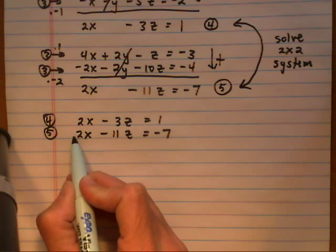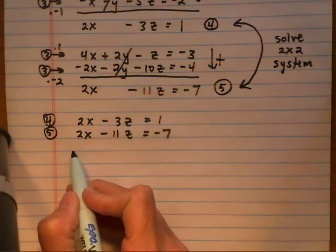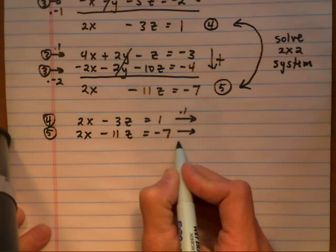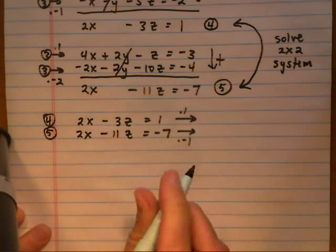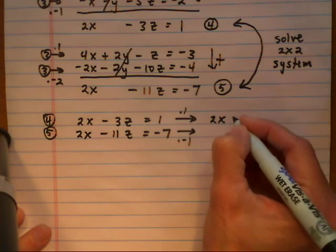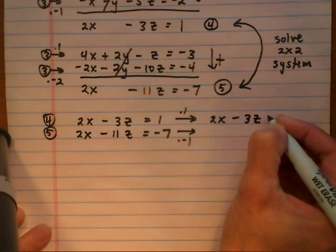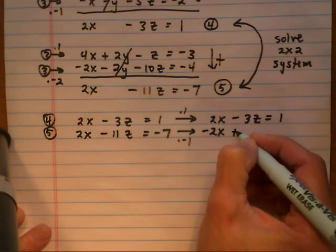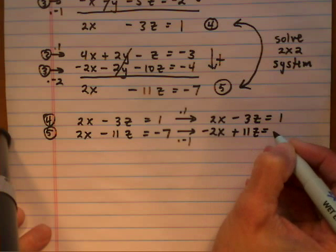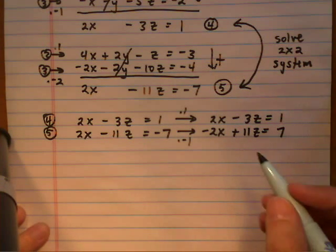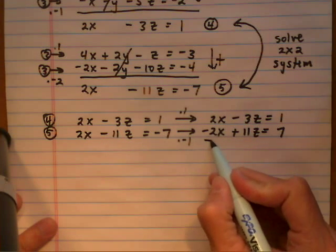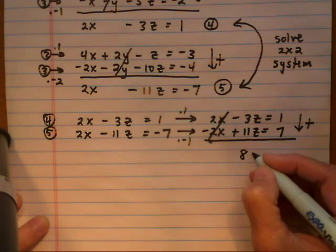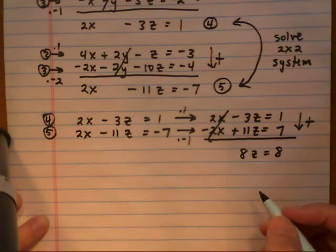If we multiply either equation by negative 1, the x's will cancel. So I'll leave equation 4 as is and multiply equation 5 by negative 1. That gives us 2x − 3z = 1 and −2x + 11z = 7. Watch out for signs here — that's the most common place to make a mistake. We add: the x terms are gone and we get 8z = 8, so z = 1.